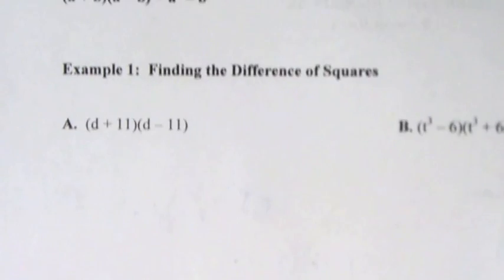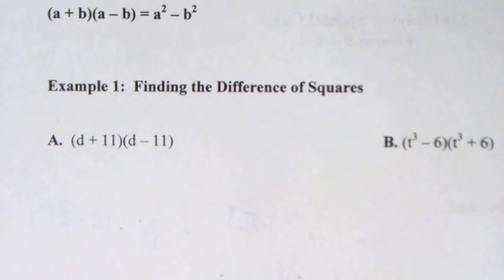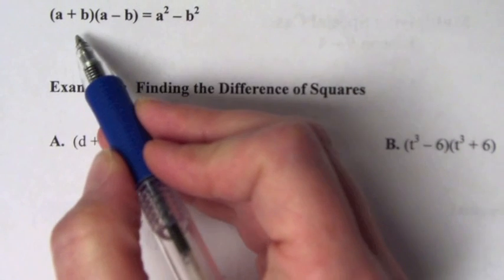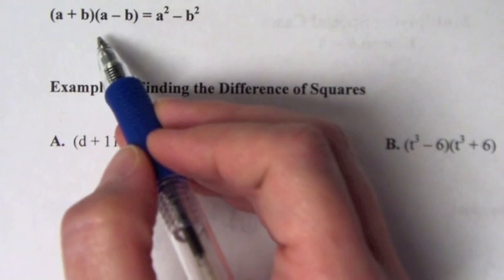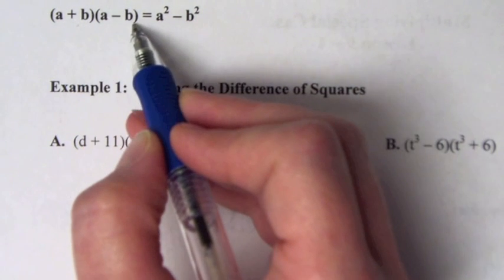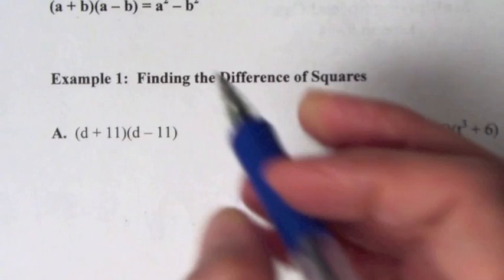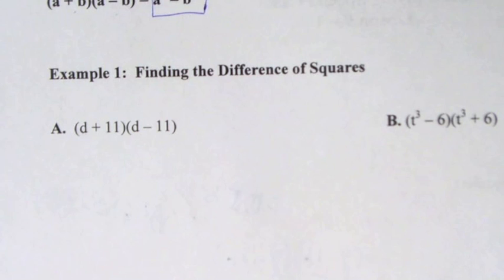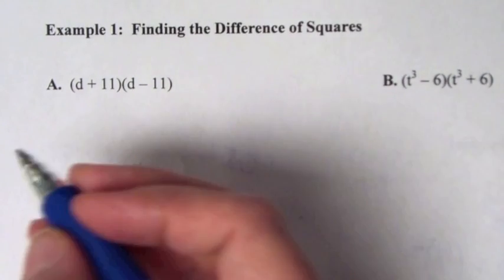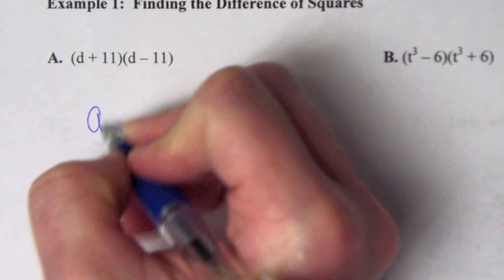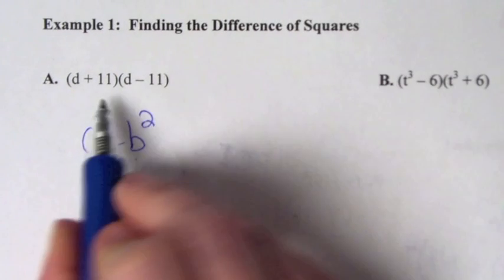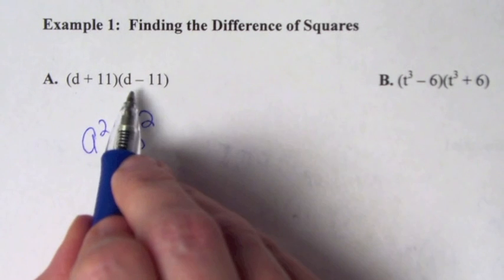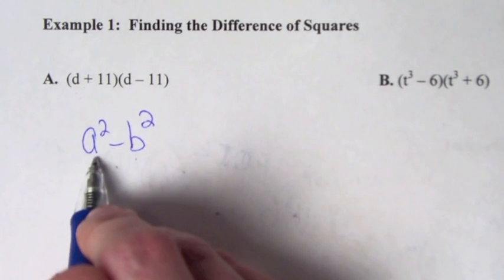This next formula is even easier — it's called the difference of squares. We have two binomials where a and b are the same, but one has a plus and the other has a minus. We use the formula a squared minus b squared. This is a shortcut for these special cases, just like the other side was the square of a binomial.